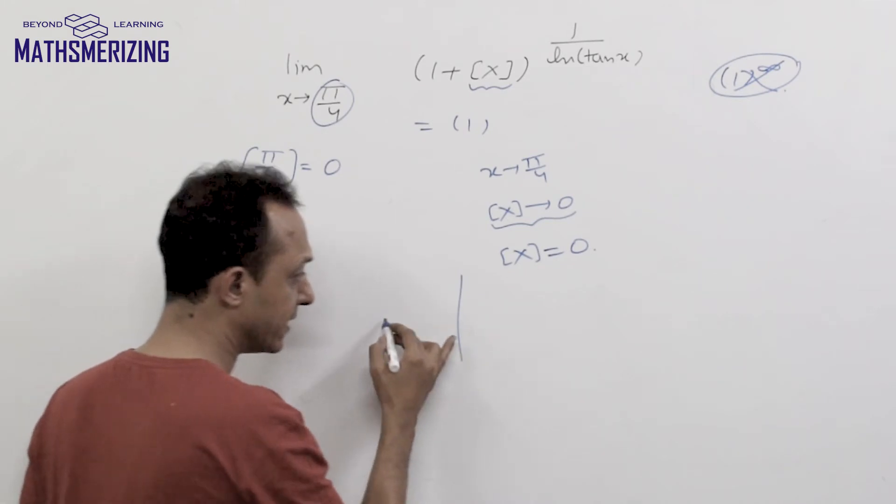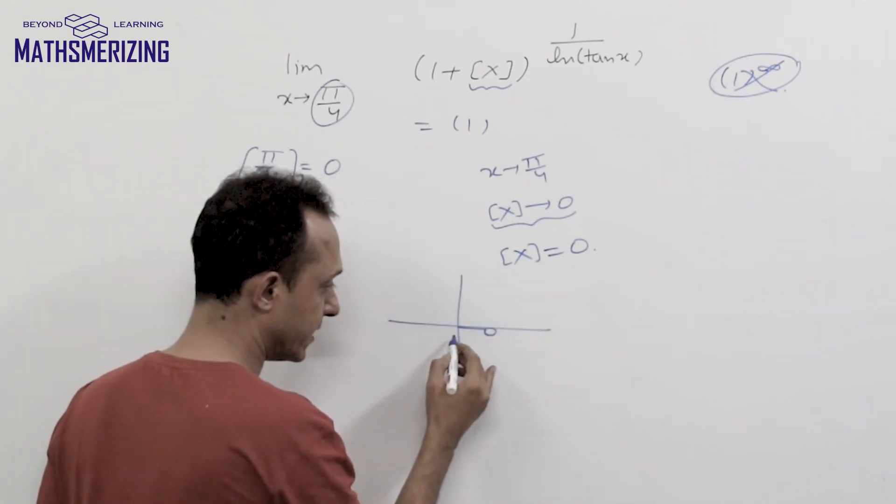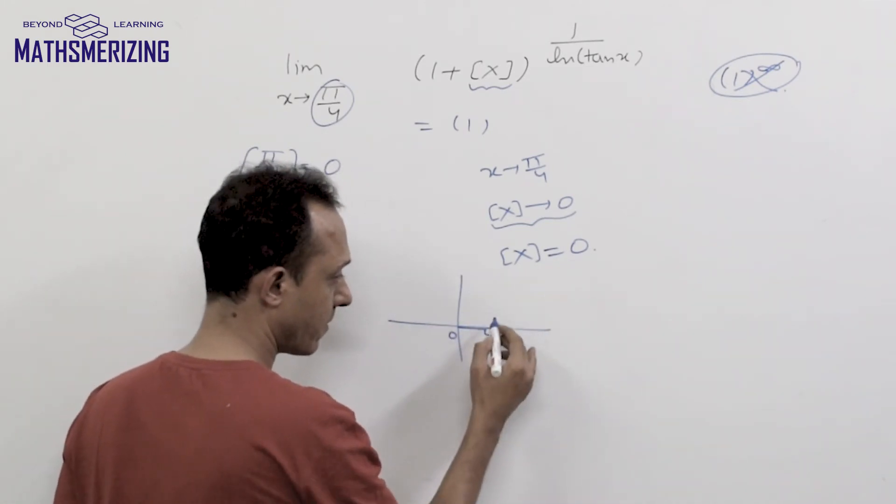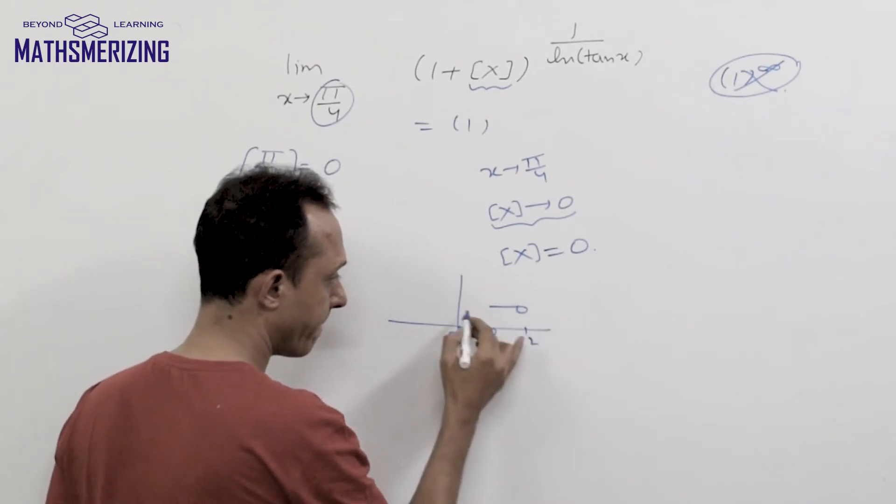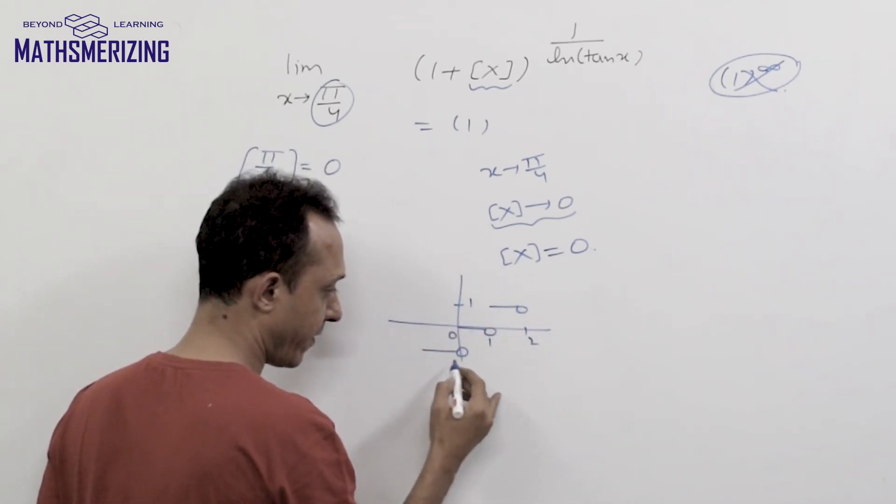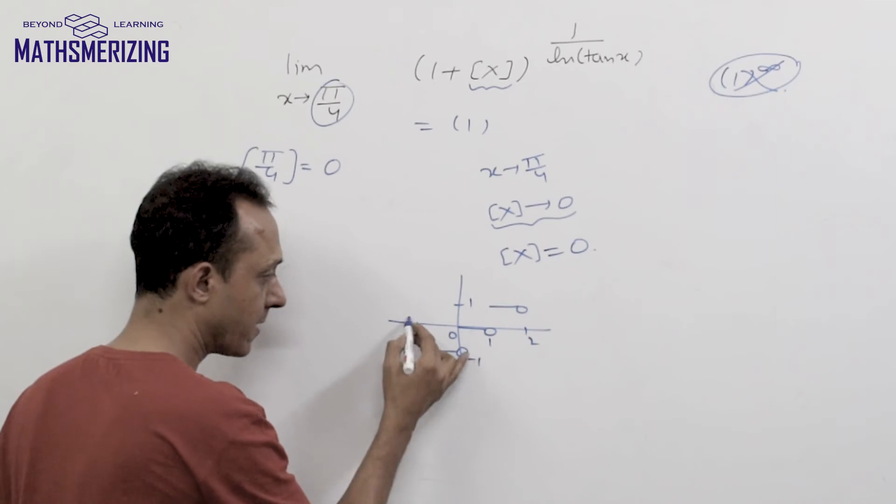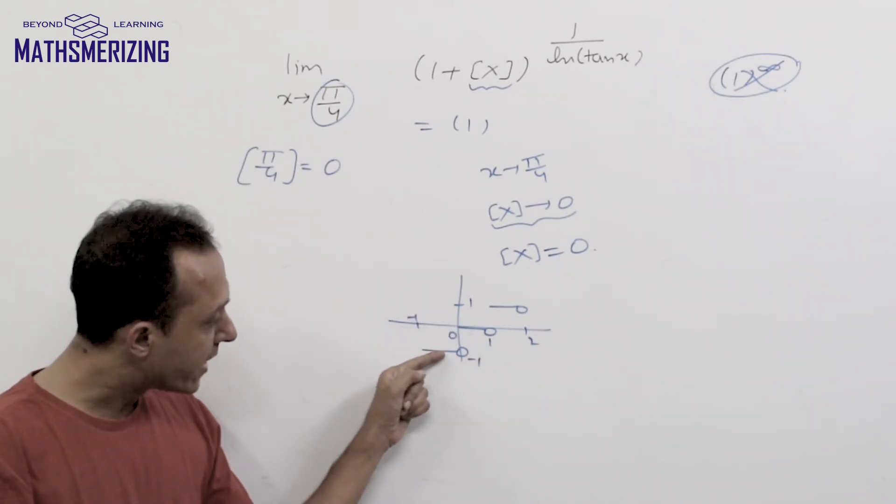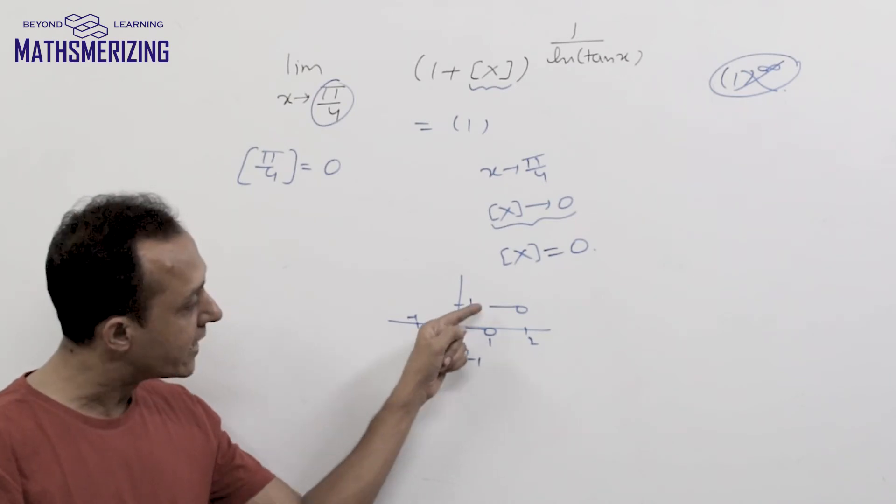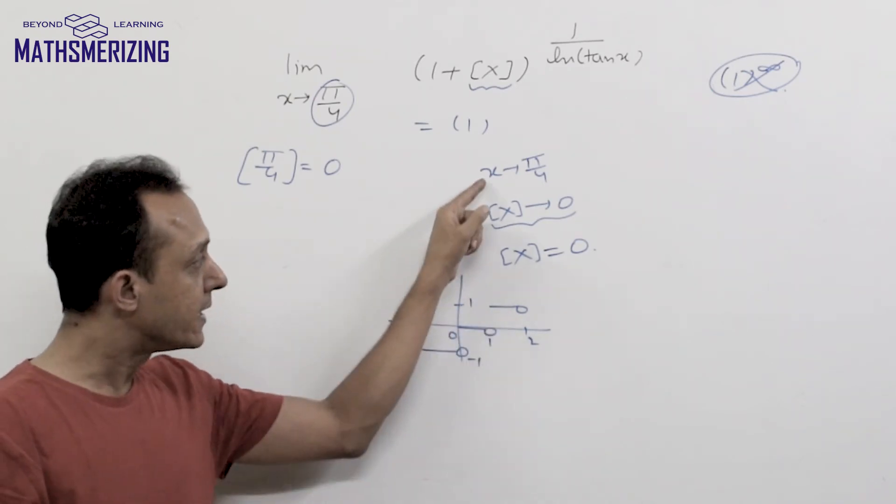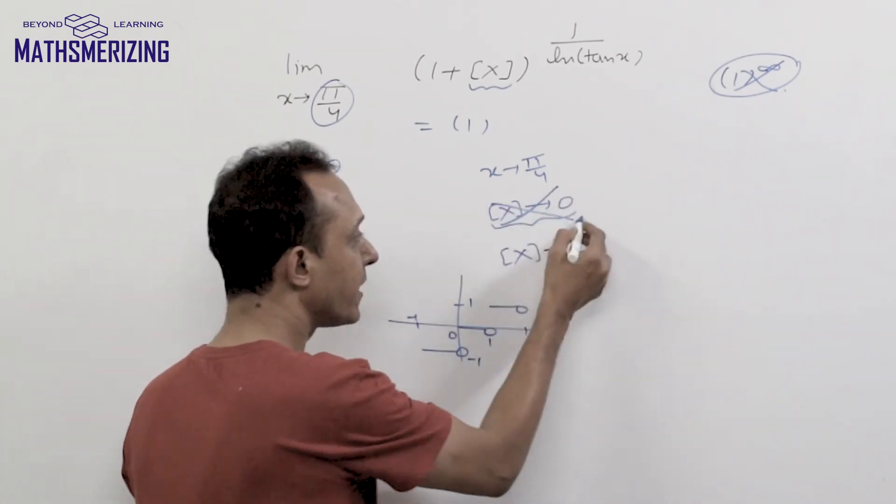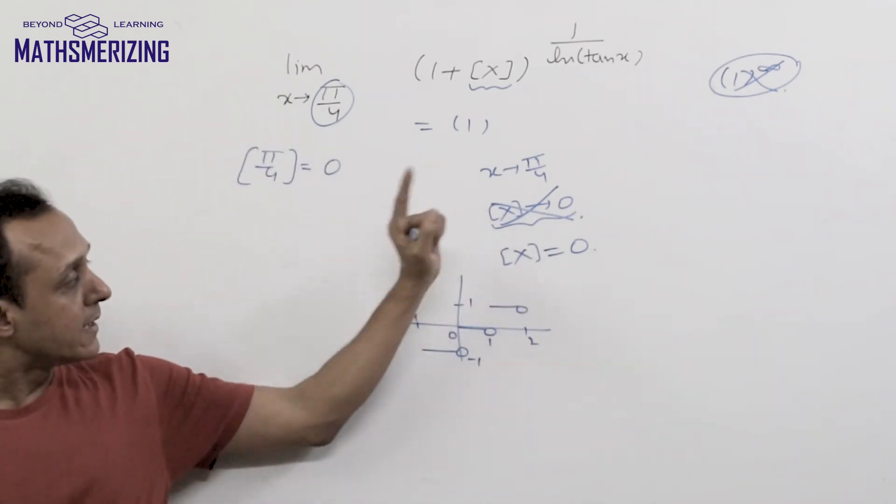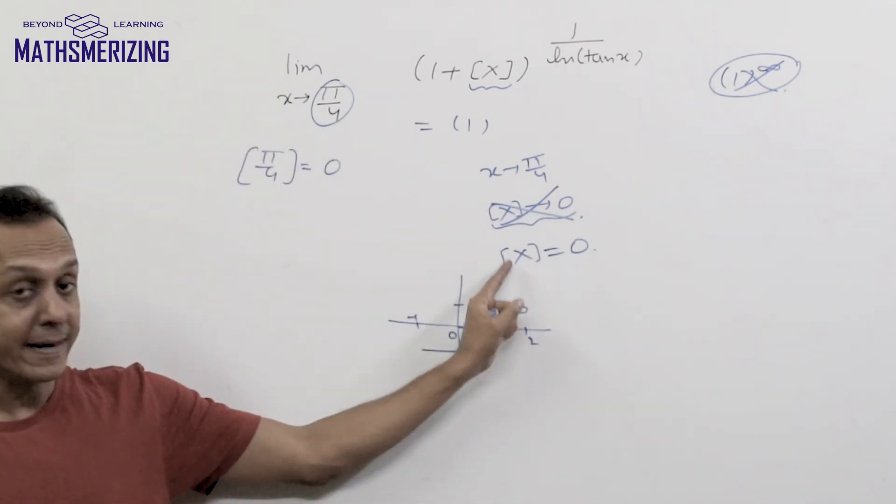If you look at the graph of greatest integer function of x, so it is 0 and then 1 and then minus 1. So it cannot approach 0. From minus 1 it will directly go to 0 and from 0 it will directly go to 1. So greatest integer function of x cannot take a limiting value, greatest integer function of x will always take an exact value.